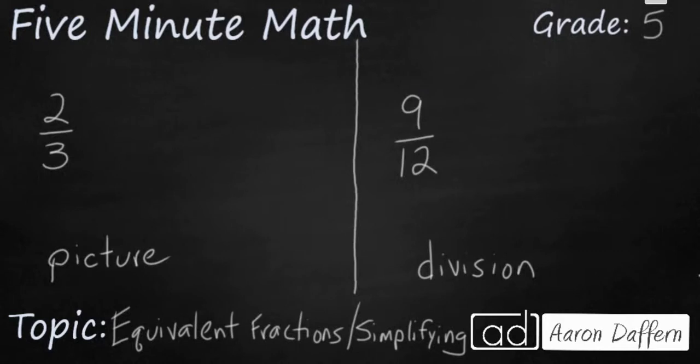Take a moment to pause the video and generate equivalent fractions for 2 thirds and 9 twelfths. For 2 thirds, make a larger equivalent fraction. And if you'd like a challenge, do it with a picture. For 9 twelfths, I want you to reduce or simplify. And for a challenge, only use division. When you have your answers, unpause the video and check your work.